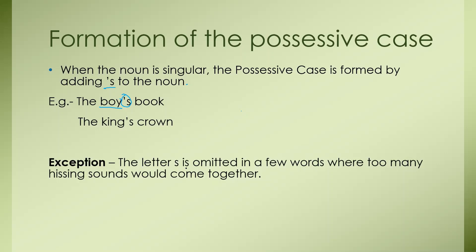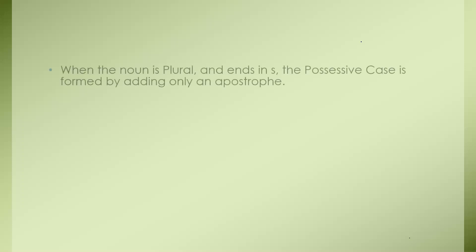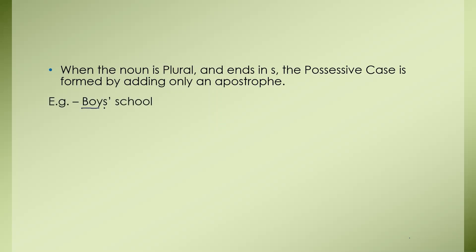Exception: the letter S is omitted in a few words where too many hissing sounds would come together. For example, 'for conscience's sake', 'Moses' loves'. When the noun is plural and ends in S, the possessive case is formed by only an apostrophe. For example, 'boys' school' — here the word 'boys' is plural and hence only an apostrophe is used; S is not used.